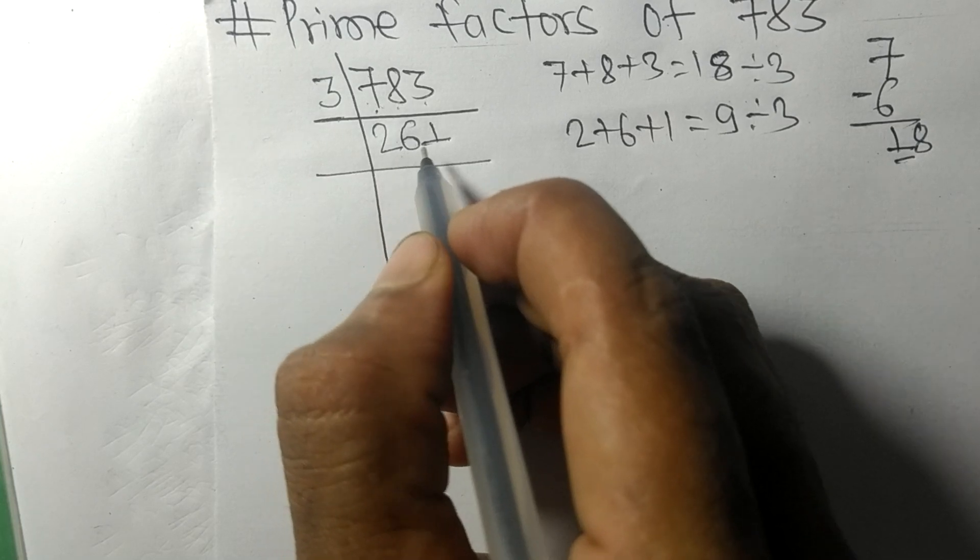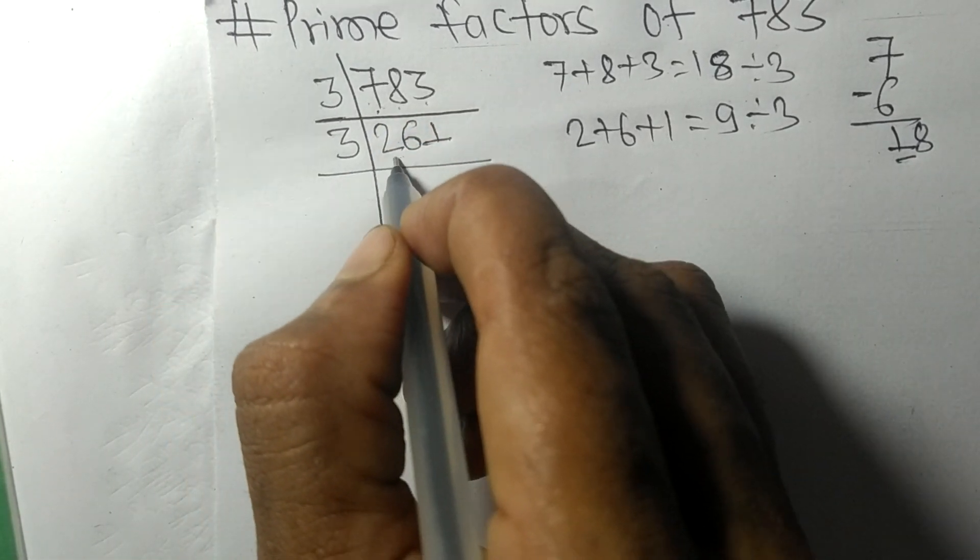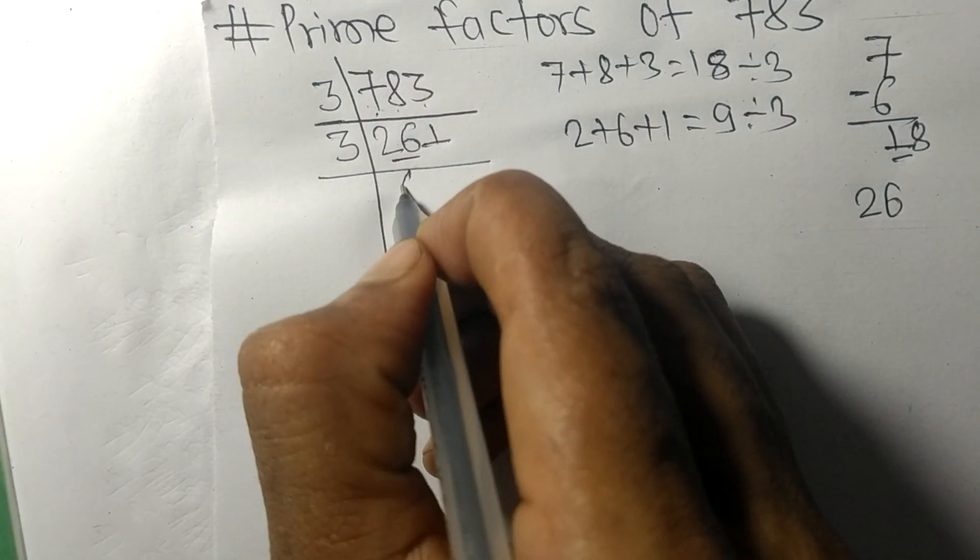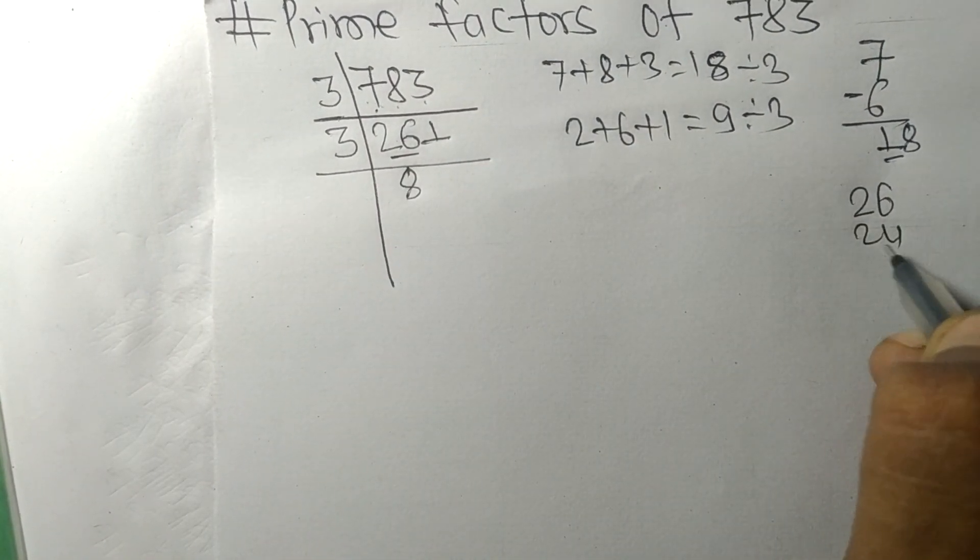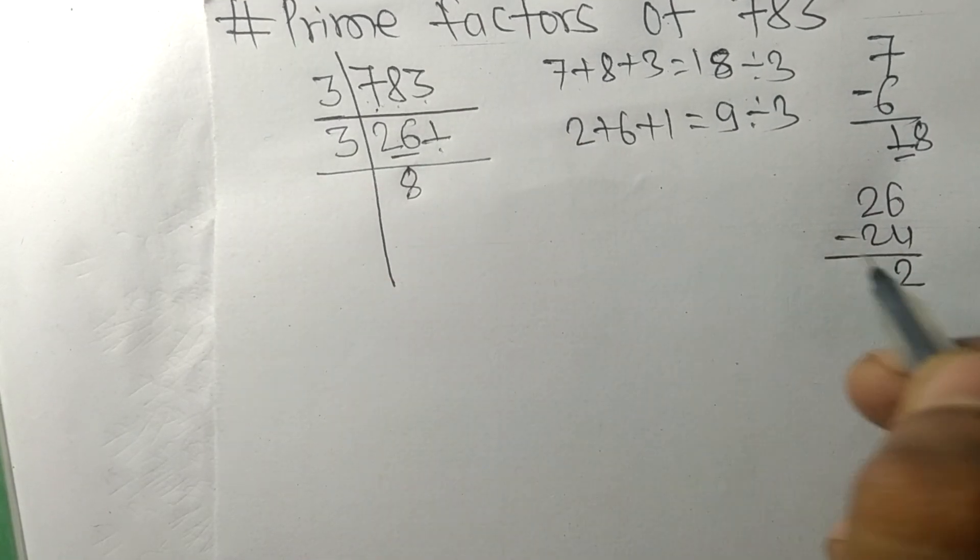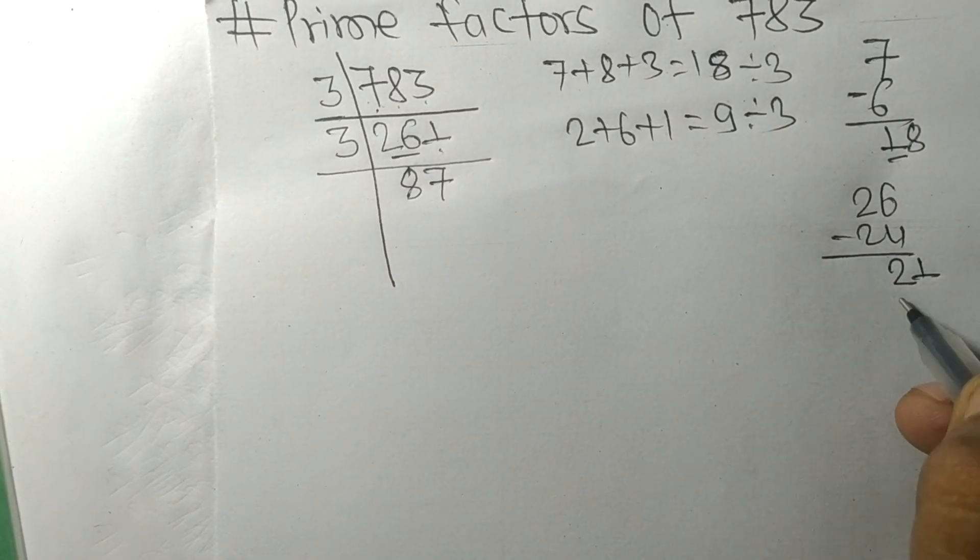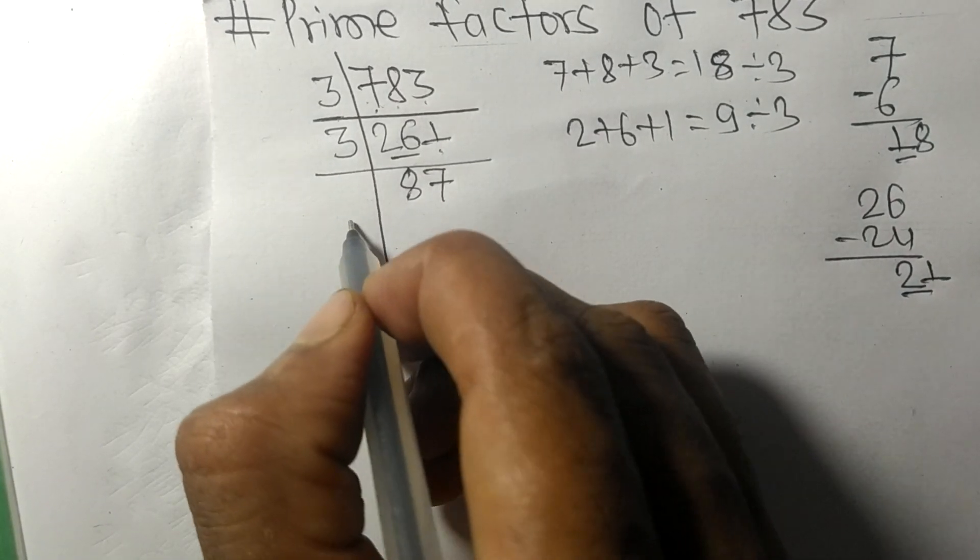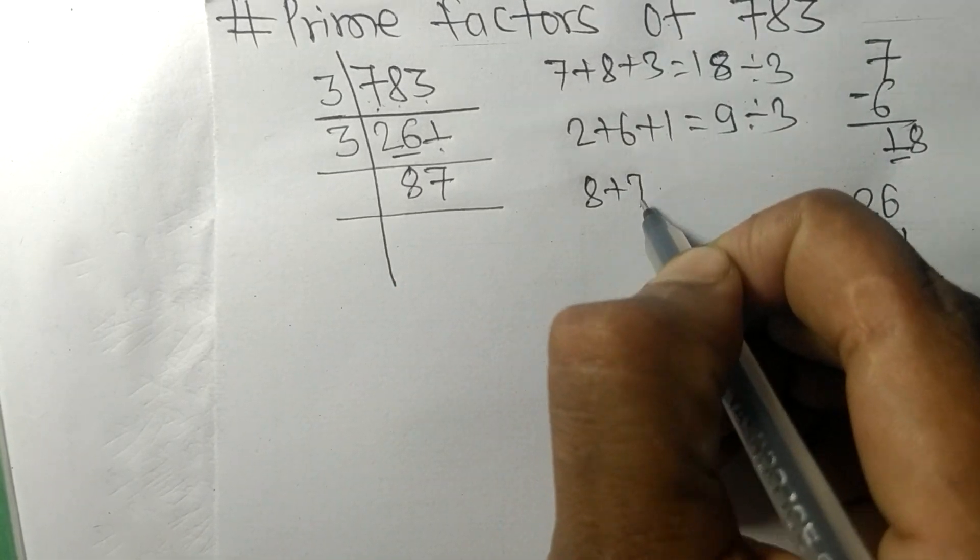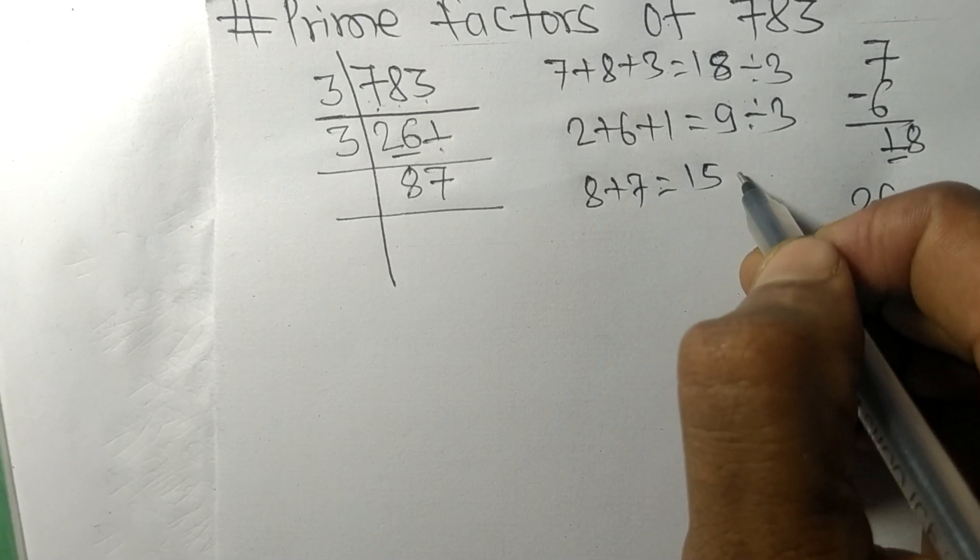So 261 is also divisible by 3. First we have 26, 3 times 8 means 24, on subtracting we get 2. And this 1, 21, 3 times 7 means 21. So now we got 87. When we add 8 plus 7 we get 15, and 15 is exactly divisible by 3.